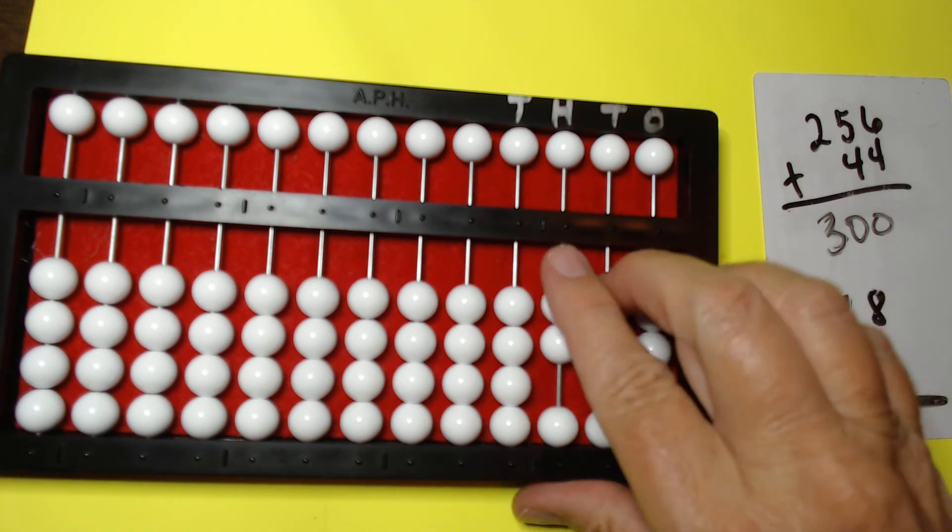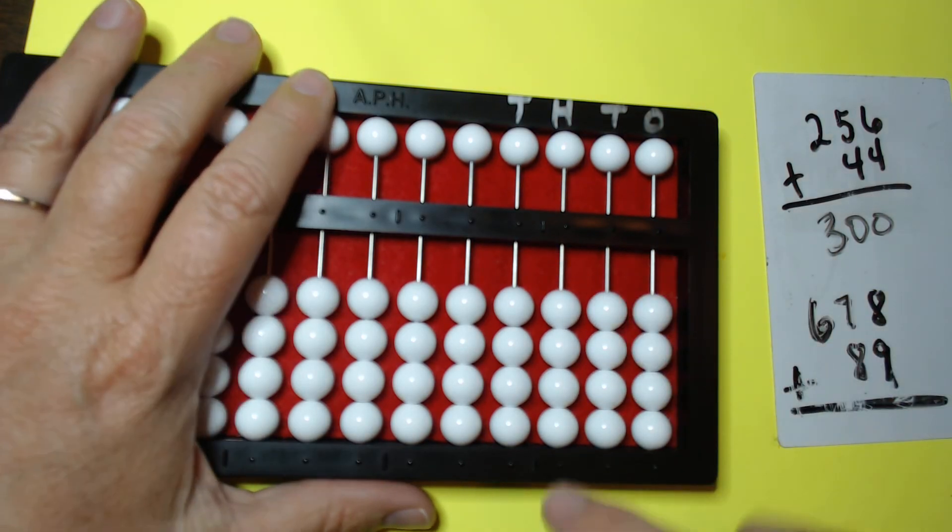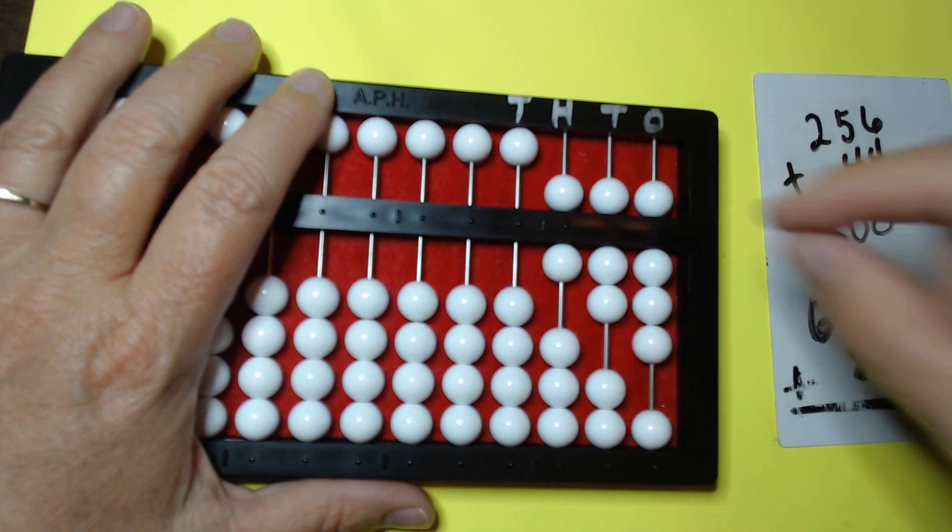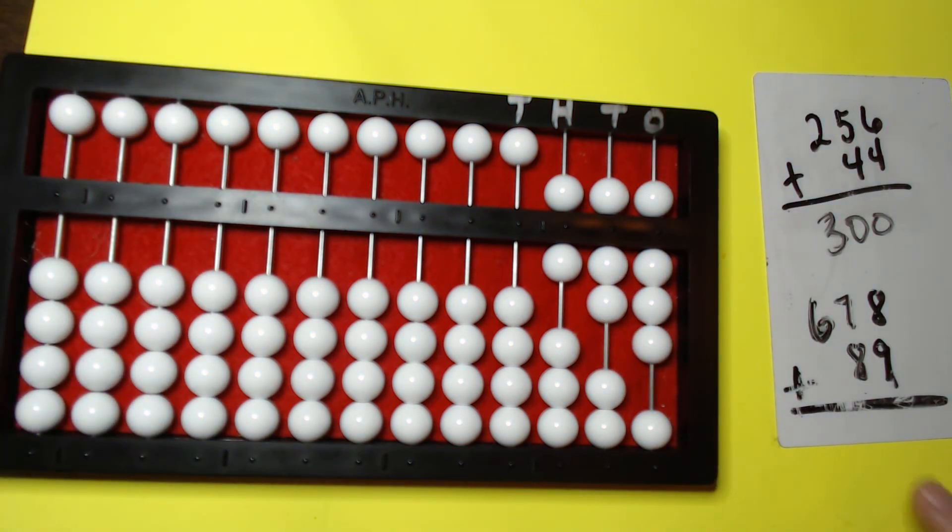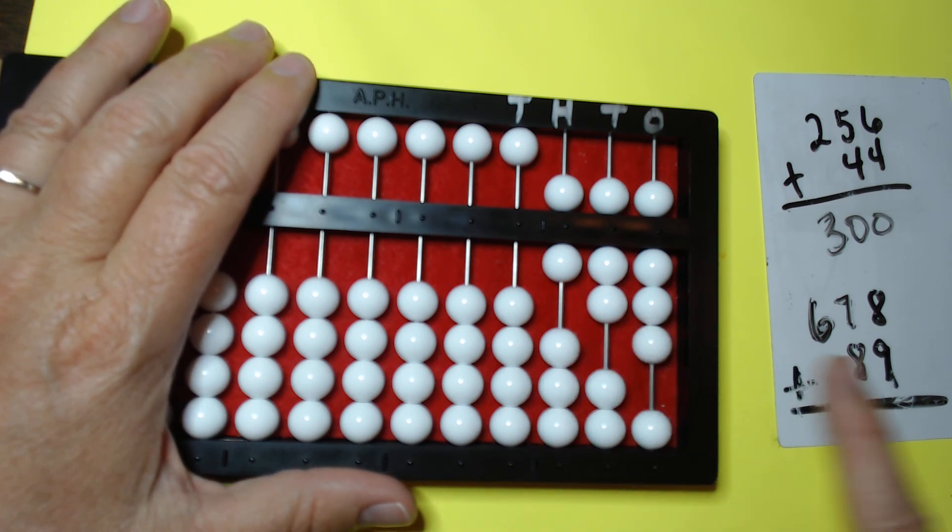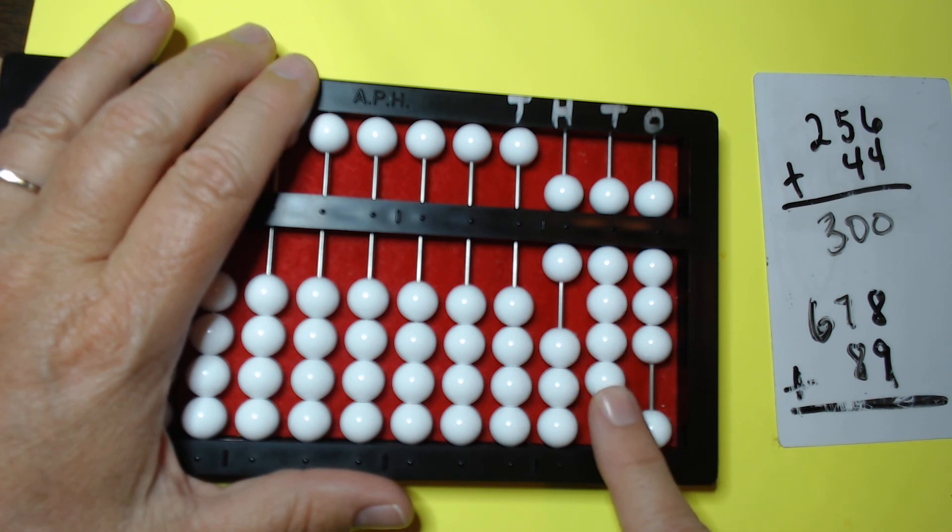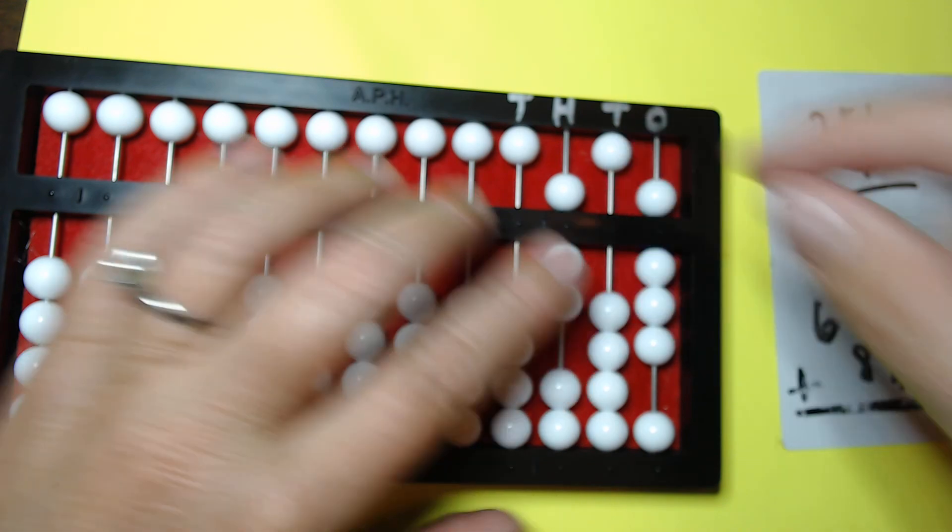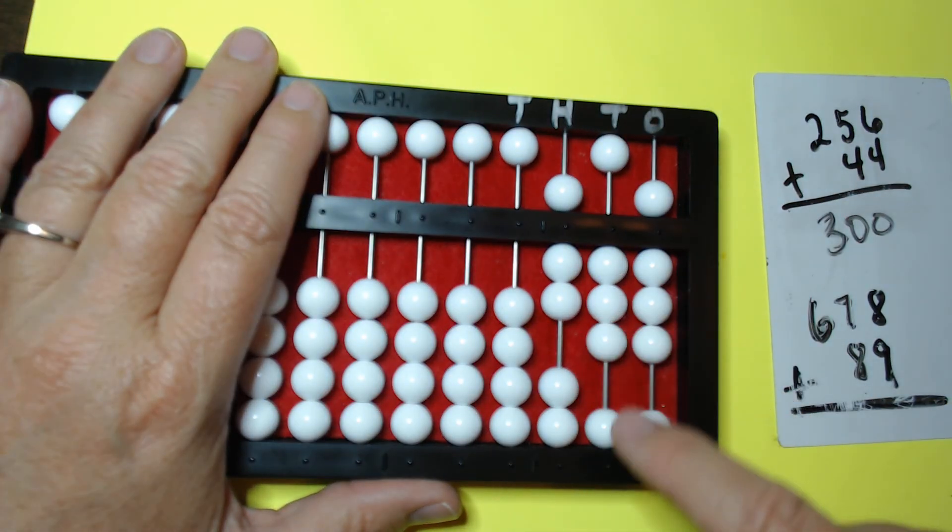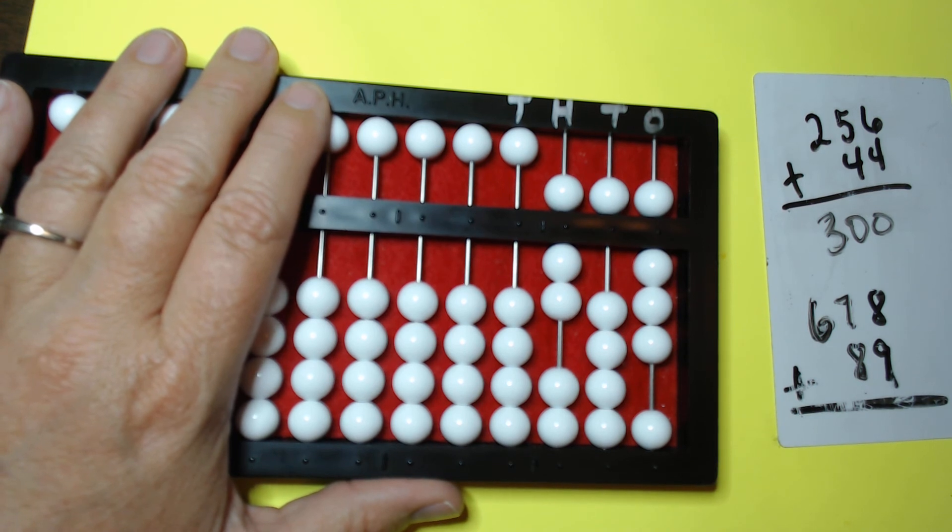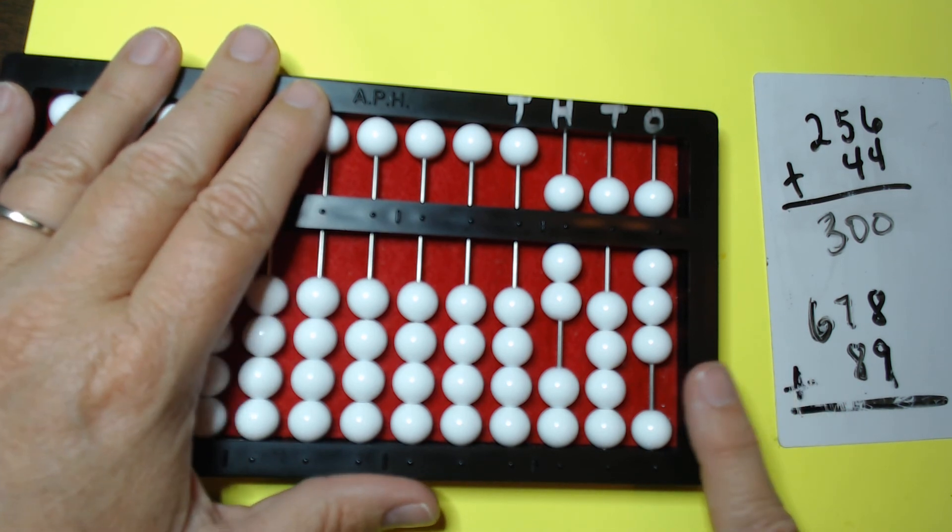All right. Last problem. 678. Let's set it. 678. We're going to add 89. So we're starting in the tens column. We're going to add 8 beads. 1, 2. We have to make an exchange. 3, 4, 5, 6, 7, 8. And now we have to add 9 in the ones column.